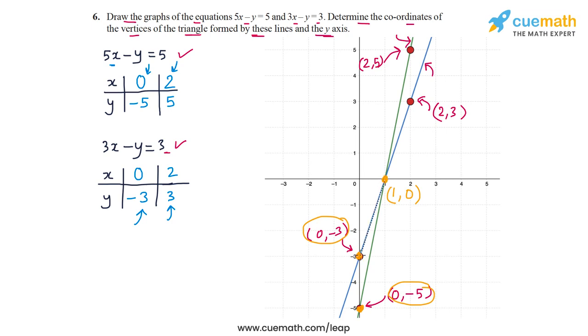And let me mark out the boundaries of this triangle. So this line joining 1, 0 to 0, minus 3, then this line 0, minus 3 to 0, minus 5 and then 0, minus 5 to 1, 0. So these three are the sides of the triangle. So with that, question 6 of this exercise is completed.